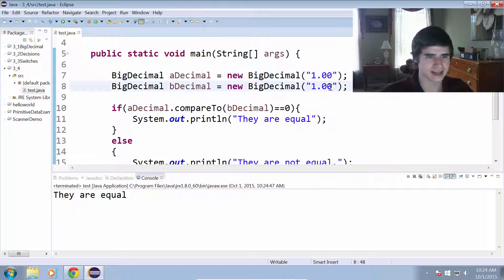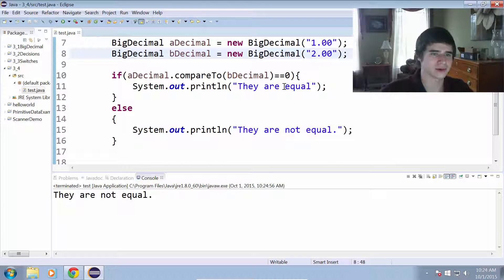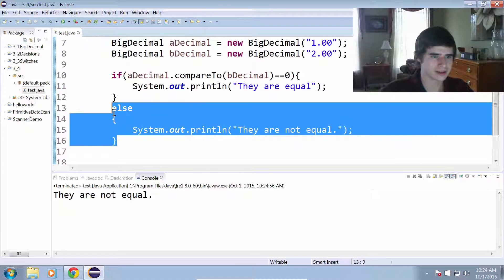Now we can change aDecimal and bDecimal, so I'll make bDecimal two, and now it will say they are not equal. Okay, next thing...